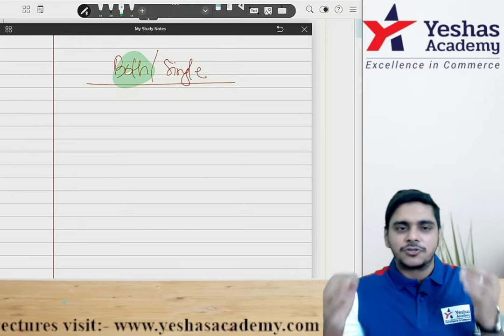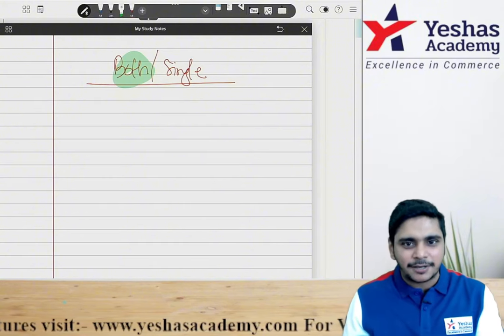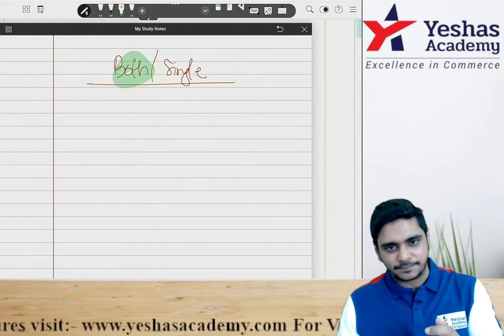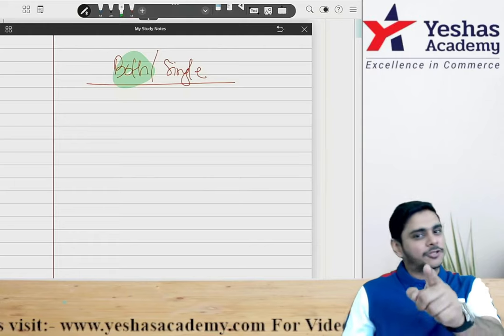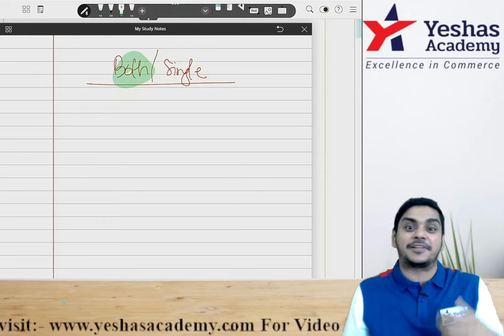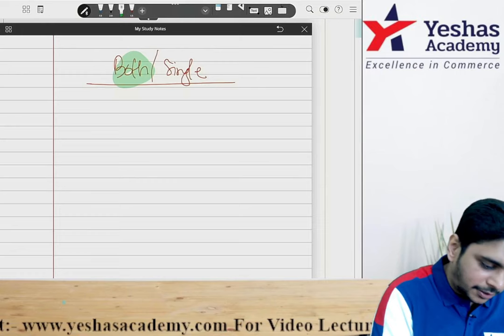So guys, this is the video for last three months strategy. How to manage both the groups, plus how to revise it, plus how to aim for a rank. Because you know it, if you get a rank or 70 plus, whichever is earlier, I will take you to that. How to plan it?